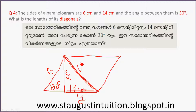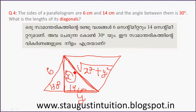The diagonal would be the root of x² plus y². If we consider the triangle formed, we need to find x and y separately.